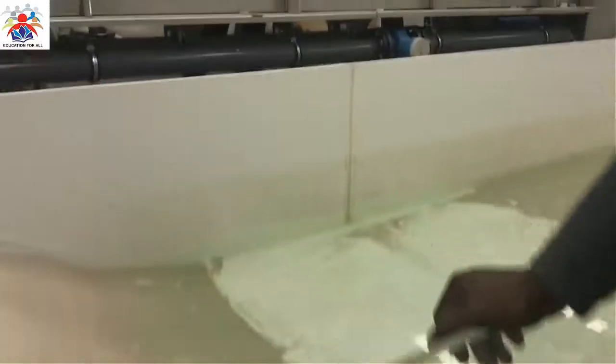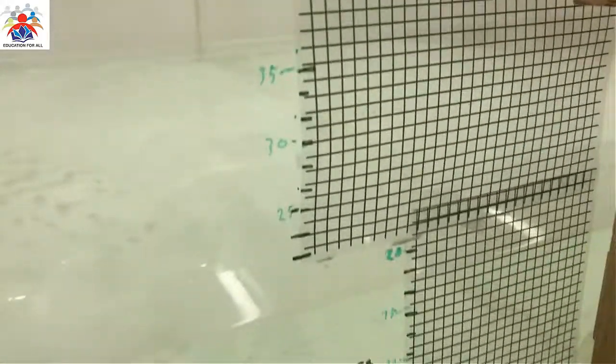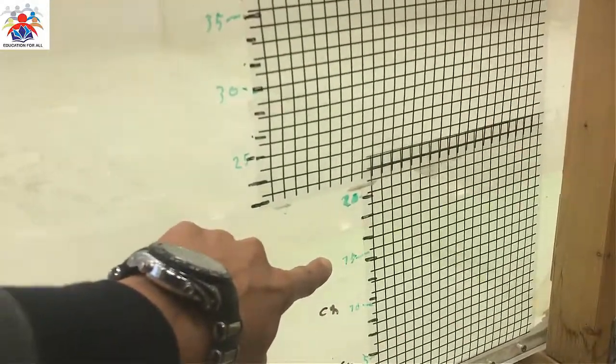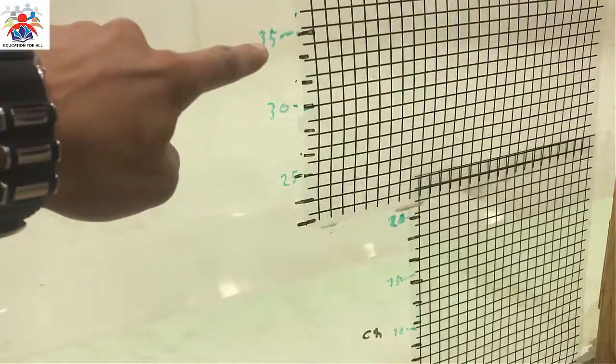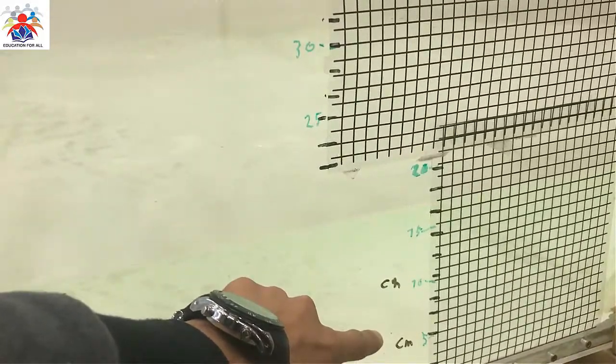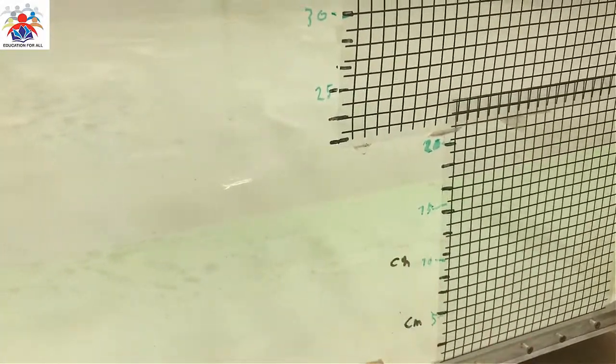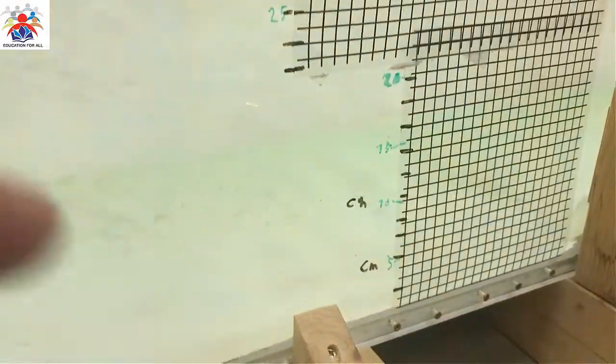There are cross-sections one, two, three, four and five. These cross-sections were drawn to find out the seepage line. The heights marked are five, ten, fifteen, twenty, twenty-five, thirty, thirty-five and forty centimeters, drawn here to measure the level of water with time. That's how we performed our experiment.